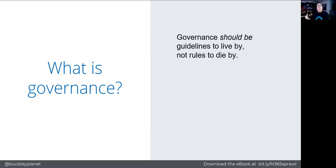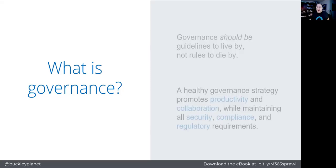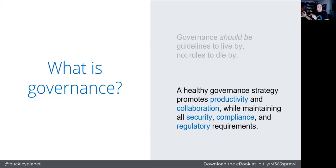What that means is: do what makes sense for your organization. You know the compliance and security standards you must adhere to. On the other side, you have end users trying to get work done — so you have to be aware of standards that might be keeping people from collaborating the way they want to. End users need to be compliant and secure, but governance is what happens between those two extremes. A healthy governance strategy promotes productivity and collaboration while maintaining security, compliance, and the regulatory requirements of your organization. We need standards in place to securely manage our intellectual property.